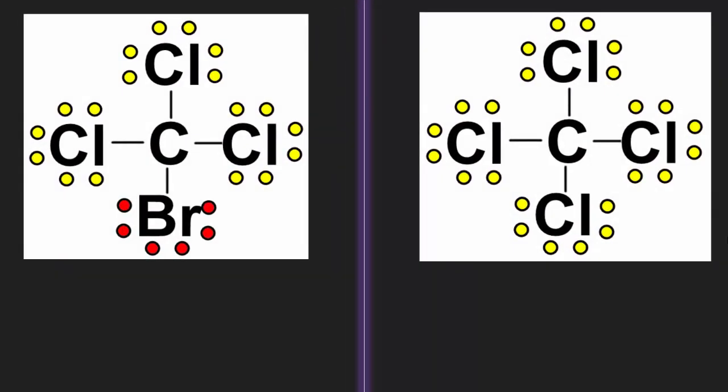Here is another set of examples, CCl3Br and CCl4. You have a central atom that has no lone pairs, but you have terminal atoms that are not identical on the left, but are identical on the right.